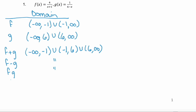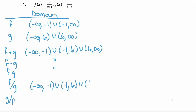The only time it'll be different is for f divided by g and g divided by f. For f divided by g, we need the intersection of the domains except for values that make g of x zero — but this g of x will never equal zero. Similarly for g divided by f, f of x as a denominator can never be zero, because both functions have numerators with nonzero values. So the domain for both quotients is negative infinity to negative one, or negative one to six, or six to positive infinity — excluding only negative one and six.